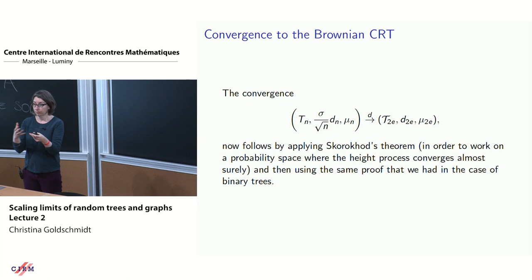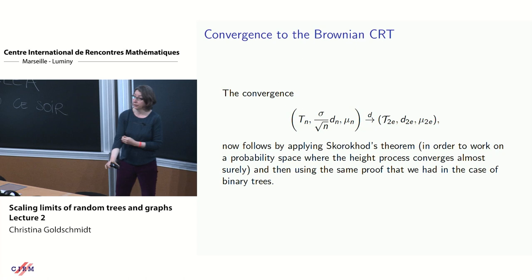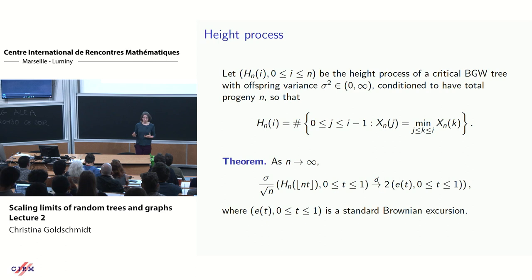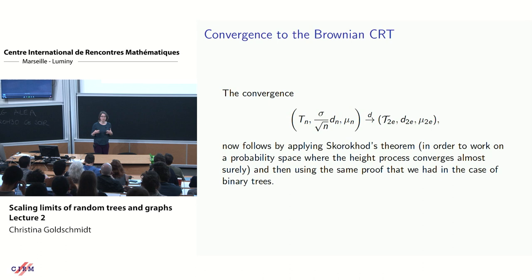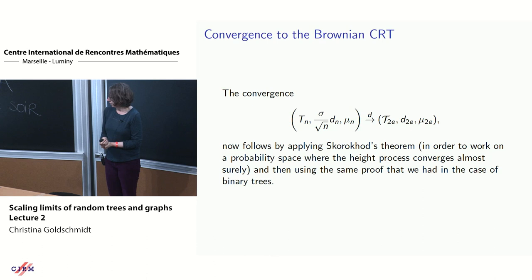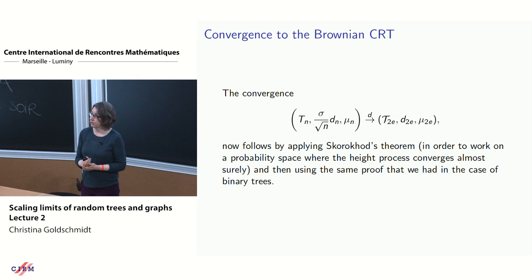Convergence of the tree itself with its metric and measure follows in exactly the same way as in the binary tree case, except that now we have convergence in distribution rather than almost sure convergence. In the binary tree case we used almost sure convergence directly; here we need Skorokhod's representation theorem to transfer to an abstract probability space where almost sure convergence holds, and then apply the same argument as before.